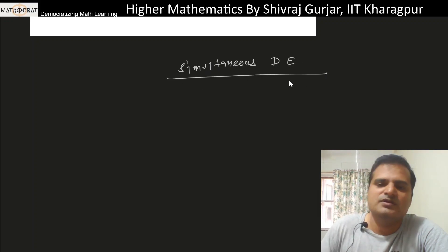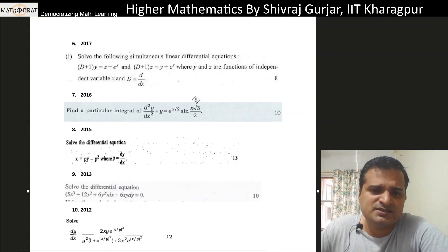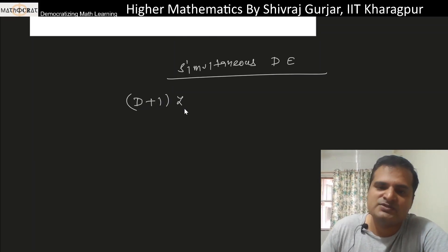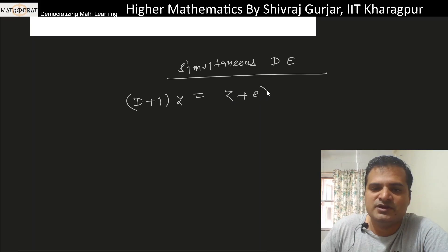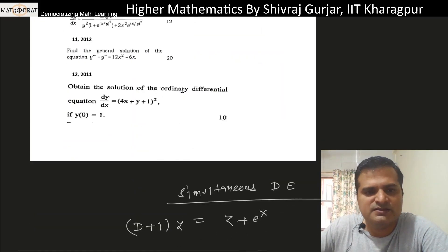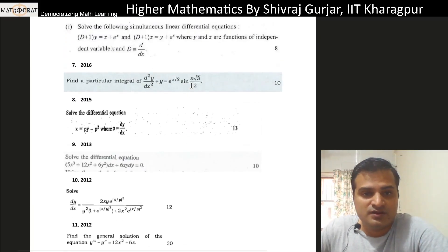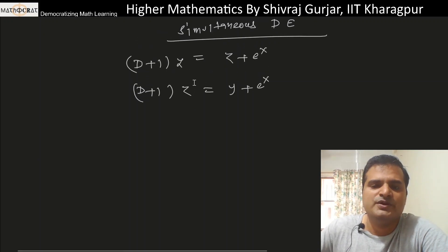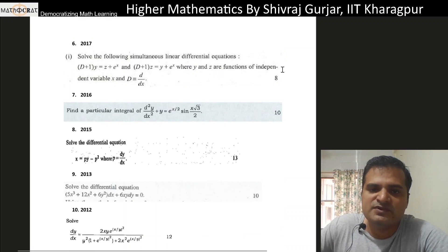Simultaneous differential equations basically come with two differential equations given over here. This is from 2017, 8 marks - we'll solve this. The topic is: (D+1) when applied on y gives us z plus e^x, and (D+1) applied on z gives us y plus e^x. Here two dependent variables are y and z. That's why this is simultaneous differential equation, where y and z are functions of independent variable x.